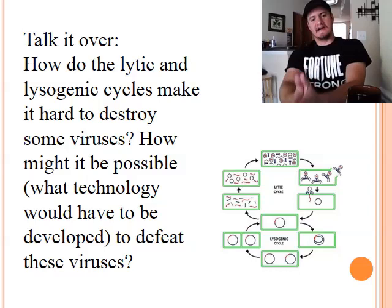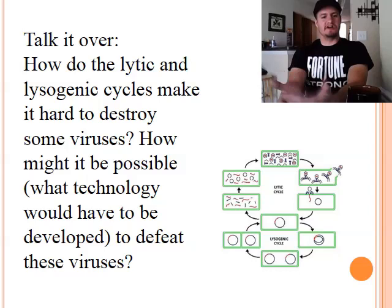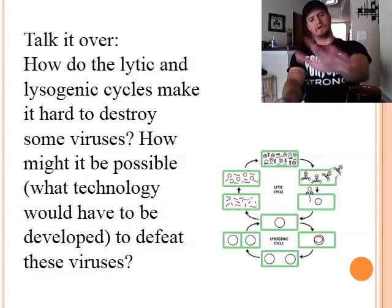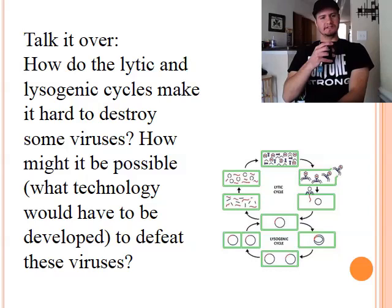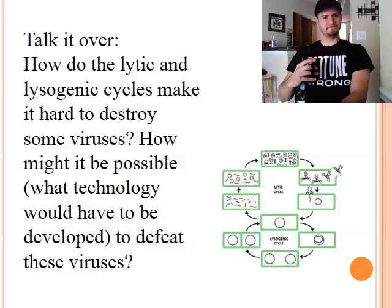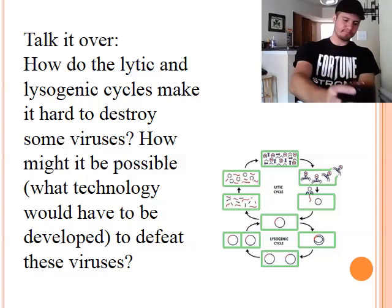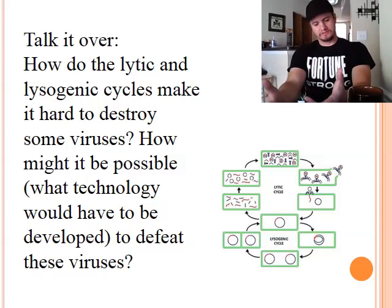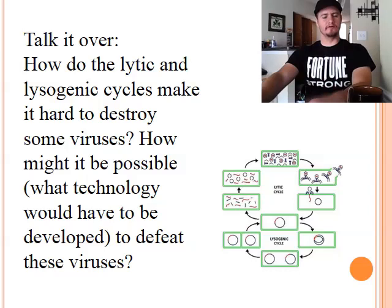So, go ahead and think about this for a sec. How do the lytic and lysogenic cycles make it hard to destroy some viruses? And how might it be possible or what technology could be developed to defeat these viruses? I'm going to let you think this one over to yourself while I enjoy a little bit of this delicious tea. Still drinking that peach honey white tea. Oh man, it's fantastic. Anyway, so think about different options that could be used to destroy these things. You can keep thinking it over, but we're going to move on.